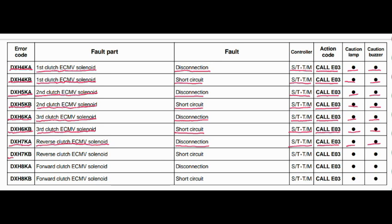Error code DXH7KB. The faulty part is the reverse clutch ECMV solenoid. The fault is a short circuit. The steering and transmission controller is related to this fault. Action code is E03, caution lamp will blink, and caution buzzer will beep.